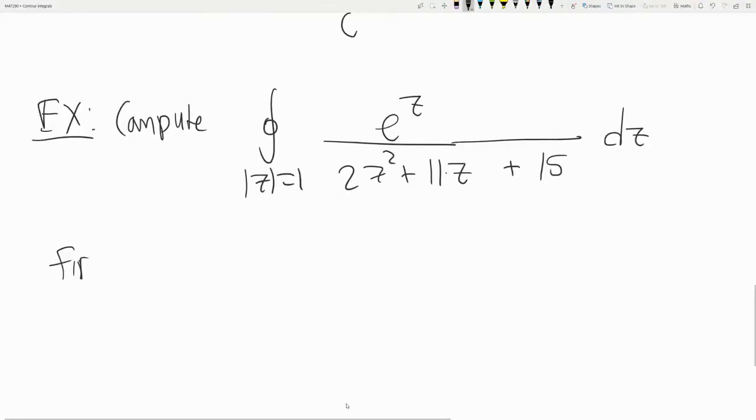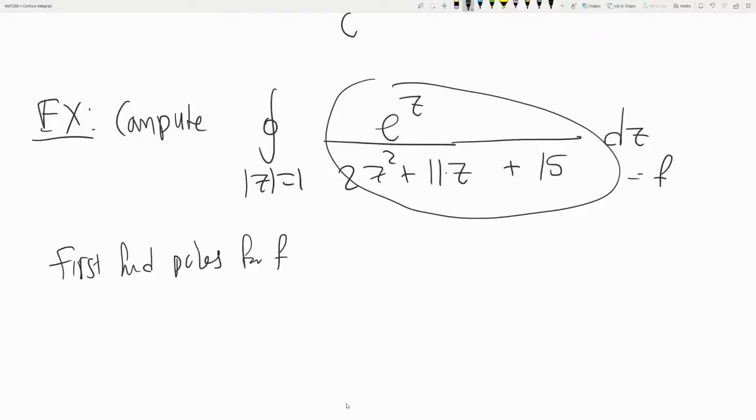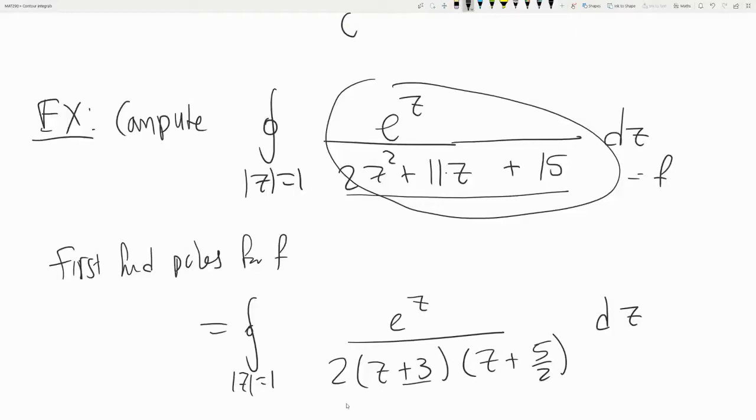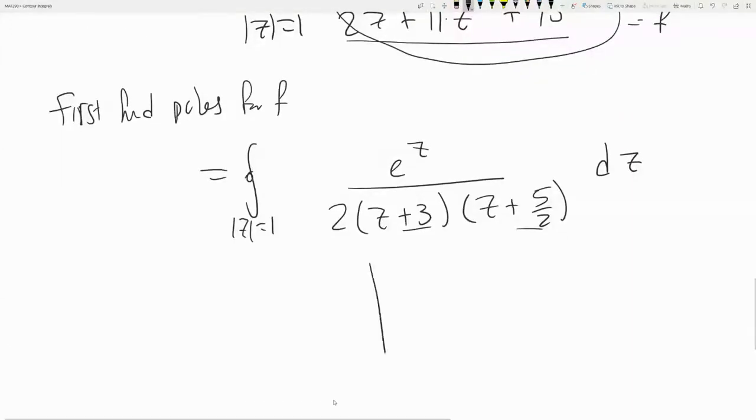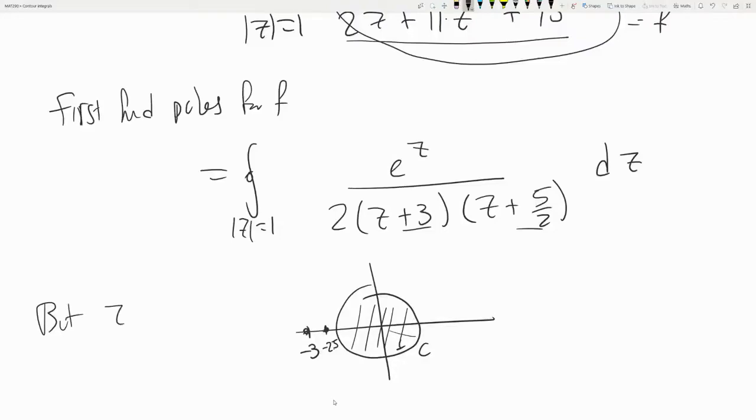Okay, so first find poles for F. So this is F. This is equivalent to finding the roots. I'll leave that to you. I mean this is just a quadratic, so it's not hard. So we have 2(z + 3/2) and (z + 5/2). So the roots are, let me draw the unit circle, minus 3/2 and minus 5/2. Okay, and this is the contour. But z = -3/2 and -5/2 are not inside the unit circle.